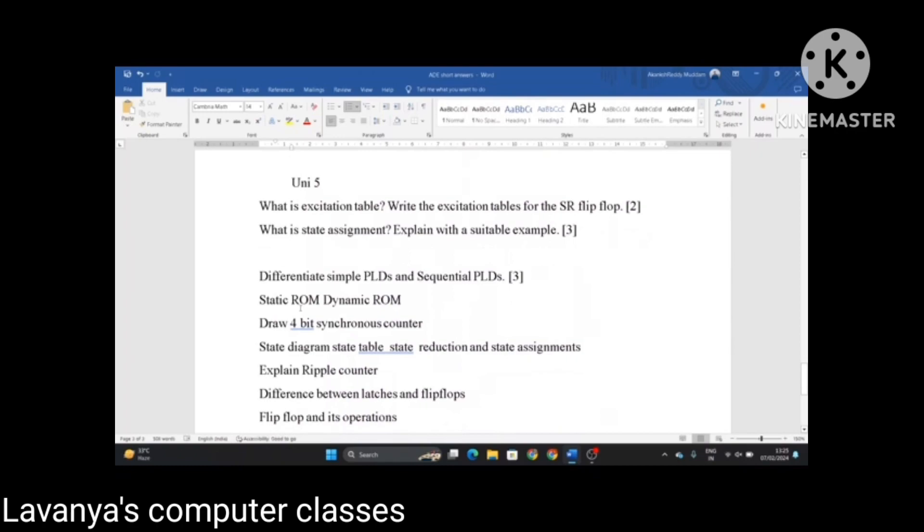The unit 5 questions are: what is excitation table? Write the excitation table for the SR flip-flop. Conversions are very important here. Conversion of SR to JK flip-flop, JK to SR, any flip-flop to any flip-flop. What is state assignment? Explain with a suitable example.